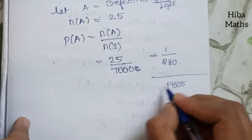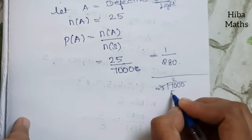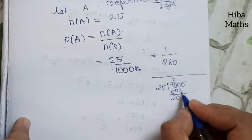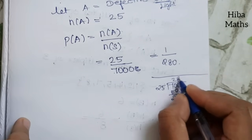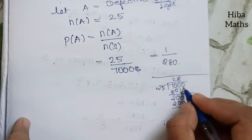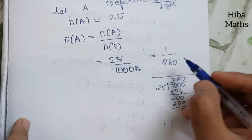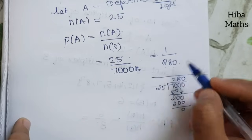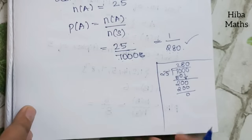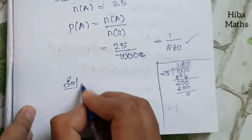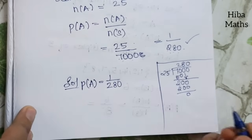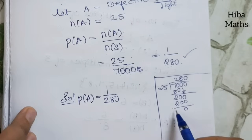Probability P of A equals n of A by n of S equals 25 by 7000. Dividing: 7000 divided by 25 gives 280. So the answer is 1 by 280.